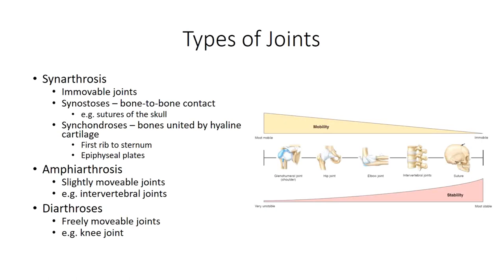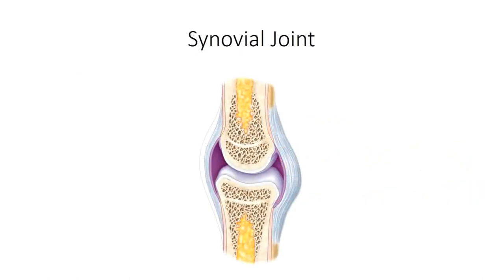Diarthroses are freely movable joints and include the synovial joints of the body. It should be noted that freely movable is a subjective term, and there is a large degree of variability in the actual range of motion for synovial joints. Ball and socket joints, for example, have a wide range of motion. Now, while the gliding movements between the carpal bones are important, you're not likely to consider them to be as freely movable as the shoulder joint. Still, as these gliding joints are synovial, they are considered to be freely movable. While the actual biomechanic movements vary across synovial joints, they all have five characteristics in common.